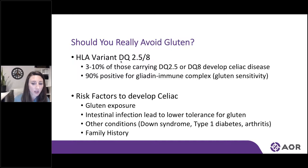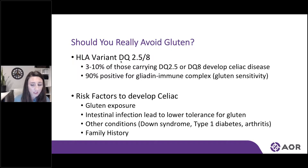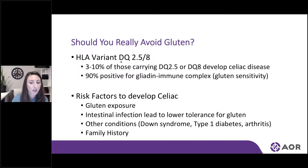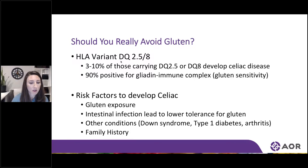By identifying this, you can lower gluten intake, get testing, or remove it completely. There are other environmental factors which can influence disease as well — thinking about infections, family history of celiac disease, any autoimmune diseases, or other genetic diseases that can increase risk.